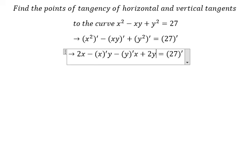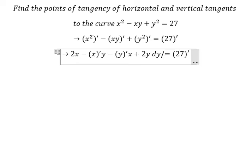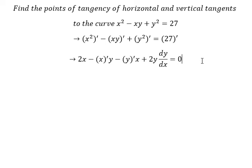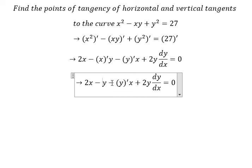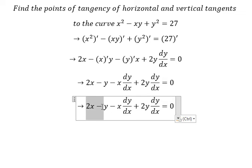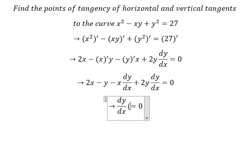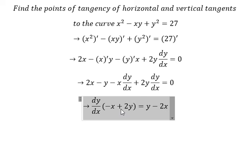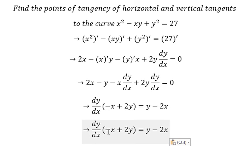We have 2y times dy/dx, and this equals zero. We also get a 1 here, and then the derivative of y gives us dy/dx. Next, I will move terms to the right and factor, then divide both sides to isolate dy/dx.